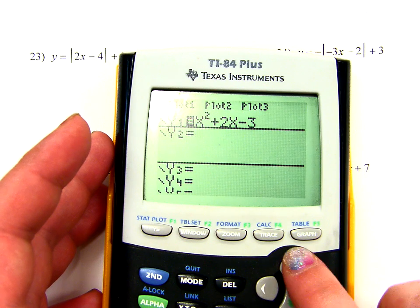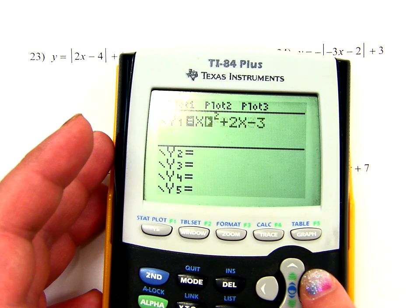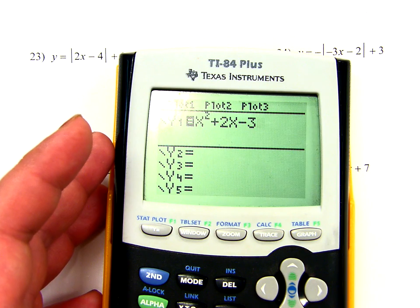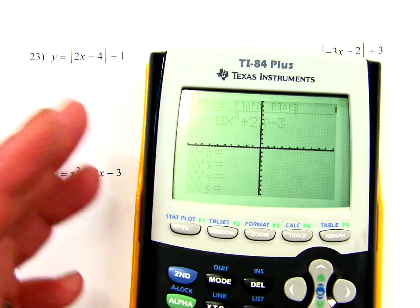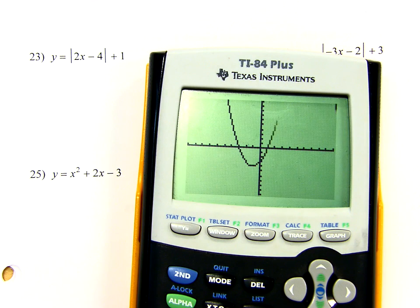So anyway, does everybody have in your first line x squared plus 2x minus 3? You all got that in there? Okay. So go ahead and hit graph. Who knows what we're going to see? Oh hey, look at that. I got my nice U shape.